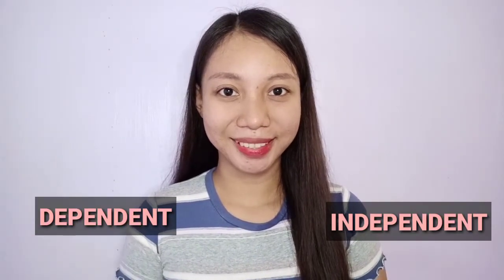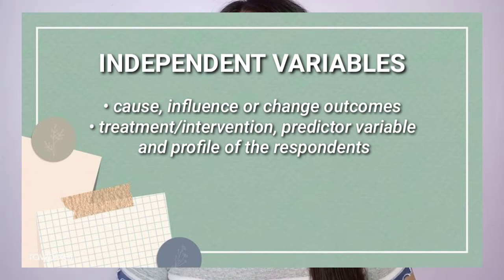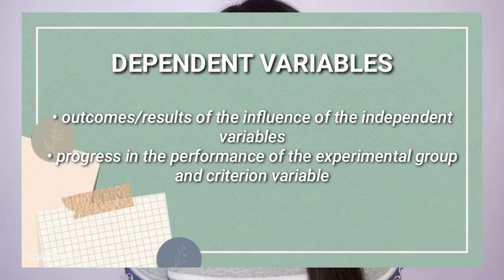Variables can also be categorized according to their purpose or role. We have independent variables. Independent variables are the ones that cause, influence, or change outcomes. The treatment or intervention and predictor variable, as well as the profile of the respondents, can be considered as independent variables. Dependent variables, in the contrary, rely on the independent variables. They are the outcomes or results of the influence of the independent variables. The progress in the performance of students who received an intervention or treatment is a dependent variable, as well as the criterion variable in a prediction study.